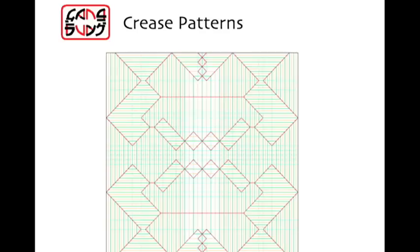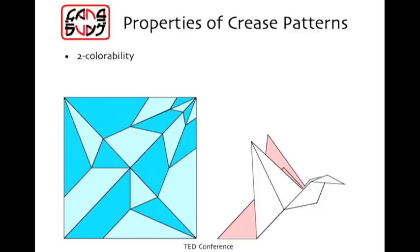Origami revolves around crease patterns. A crease pattern shown here is the underlying blueprint for an origami figure. And you can't just draw them arbitrarily. They have to obey four simple laws. And they're very simple, easy to understand.